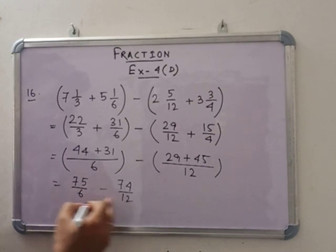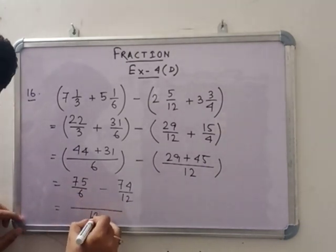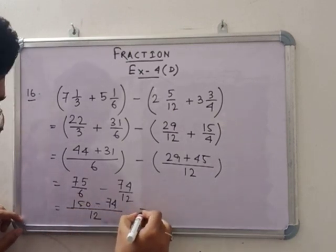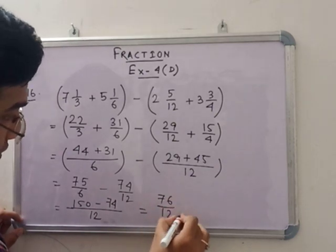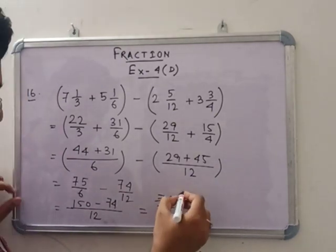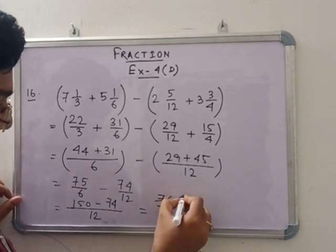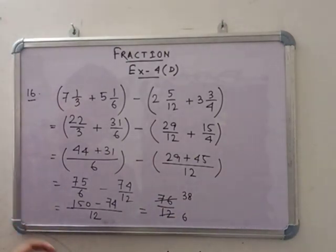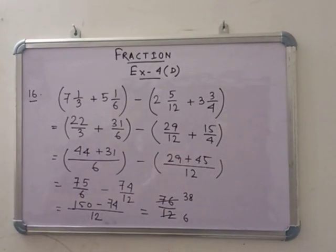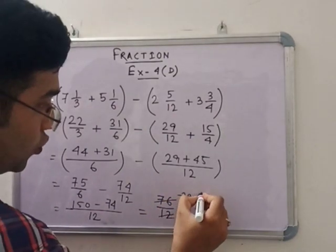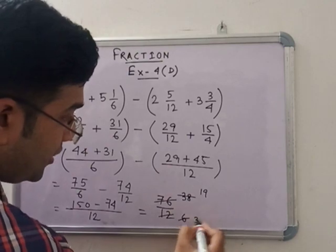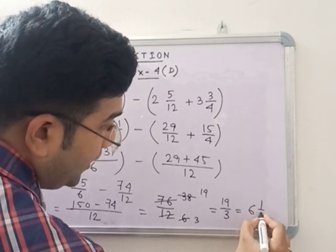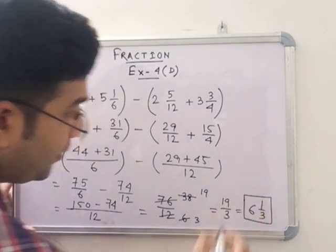The LCM of 6 and 12 is obviously 12. That means 150 minus 74, that means 76 by 12. So 76 by 12, if you cut with 2, then we get 38 by 6. 38 by 6, if you again cancel with 2, then 19 and then 3. So that means 19 by 3, that means 6 and 1 by 3. So this is the answer, 6 and 1 by 3.